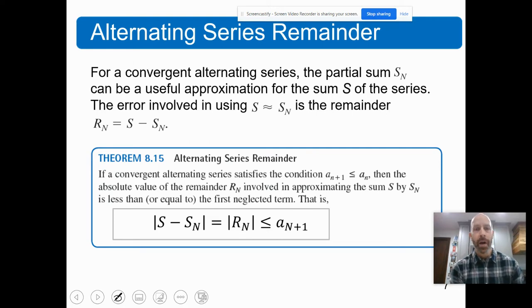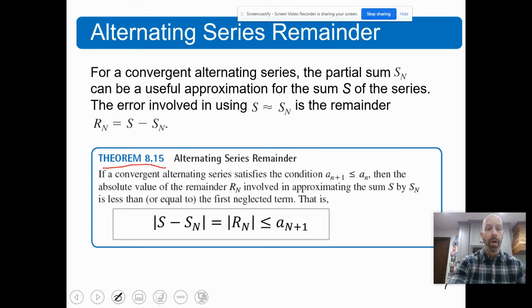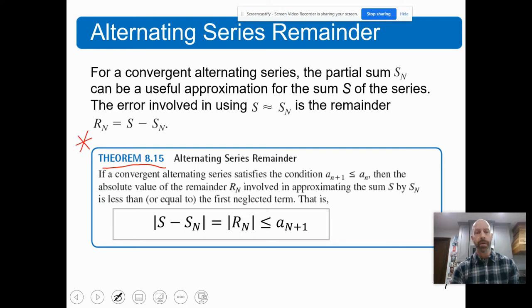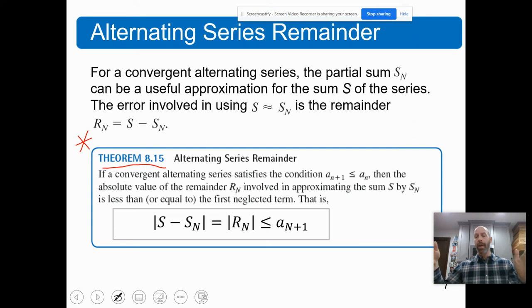The alternating series remainder — this is where we talk about how accurate a partial sum is for an alternating series. This only works for the alternating series, and this is theorem 8.15. Basically, you are adding and subtracting smaller and smaller amounts, so the more terms you go out, the more accurate it is.